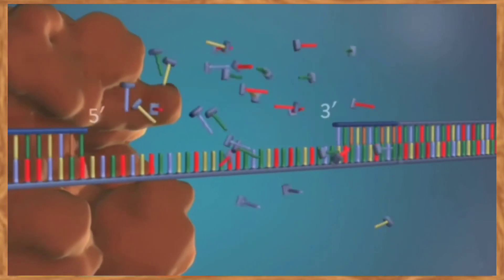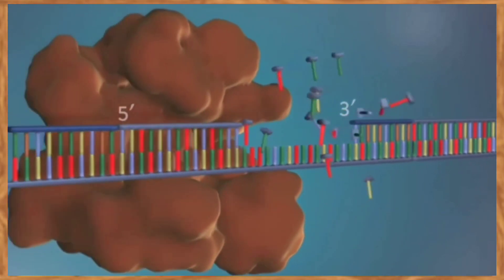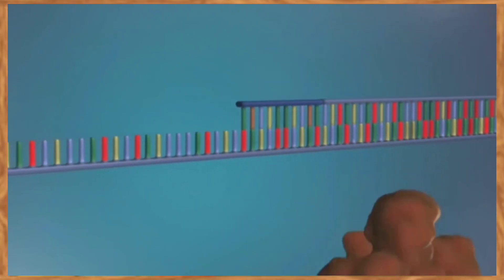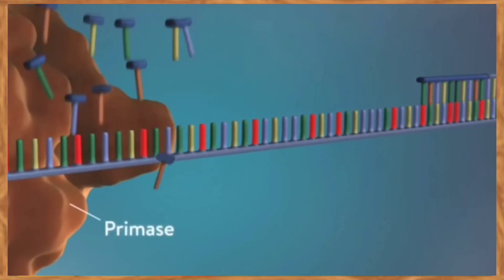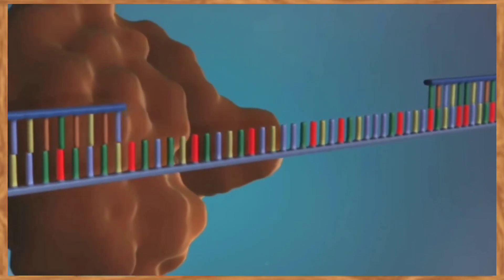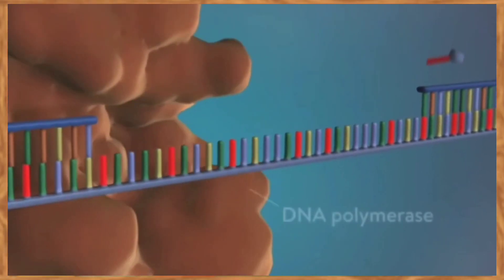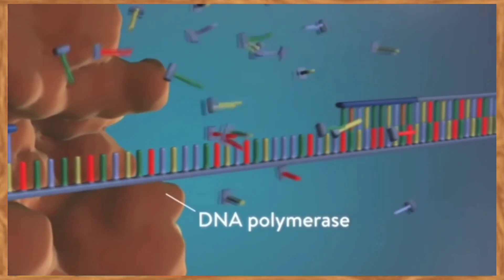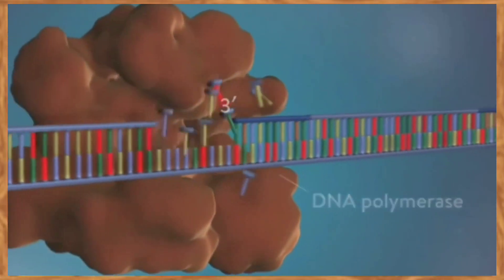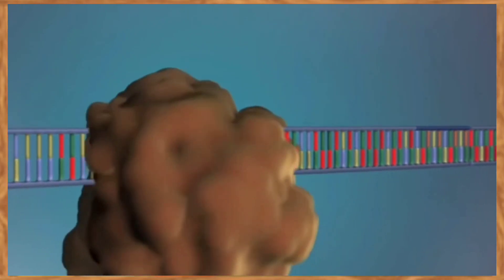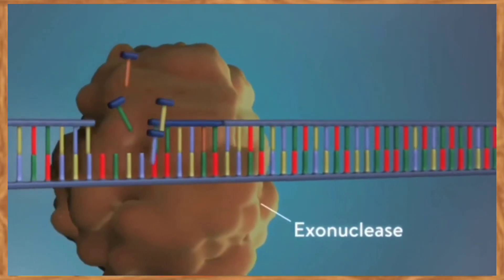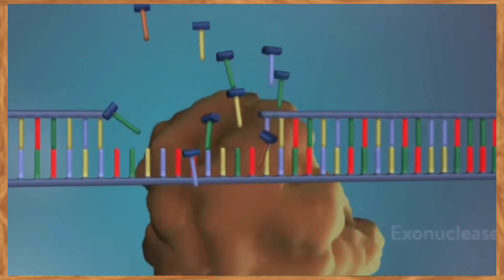Once the new DNA has been made, the enzyme exonuclease removes all the RNA primers for both strands of DNA. Another DNA polymerase enzyme then fills in the gaps that are left behind with DNA. Finally, the enzyme DNA ligase seals the fragments of DNA in both strands to form a continuous double strand.